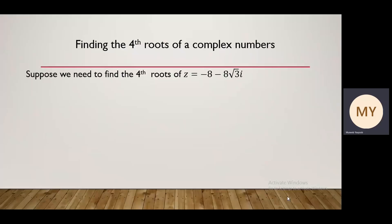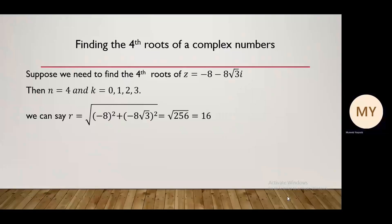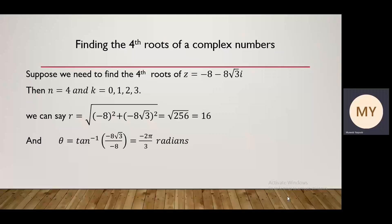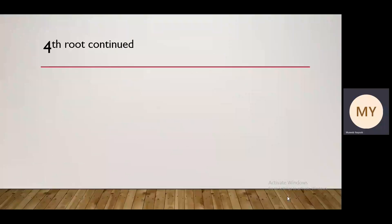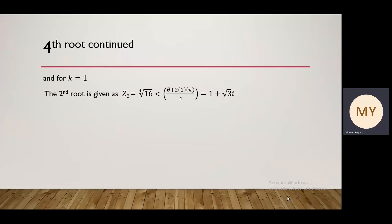Finding the fourth roots: suppose we need to find the fourth roots of z equals minus 8 minus 8 root 3 i. Here n is 4 and k equals 0, 1, 2, or 3. Now r equals root of (-8)² plus (-8√3)², that is root of 256, which equals 16. Theta equals tan inverse of (-8√3) divided by (-8), which equals minus 2 pi by 3 radians. For k equals 0, z1 equals fourth root of 16, argument (theta plus 0) divided by 4, giving root 3 minus i. For k equals 1, z2 equals fourth root of 16, argument (theta plus 2 pi) divided by 4, giving 1 plus root 3 i.